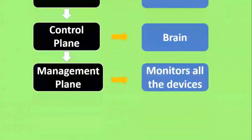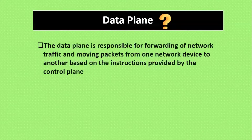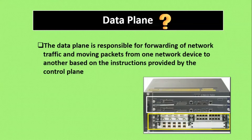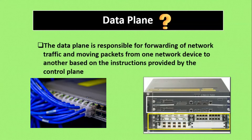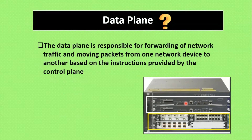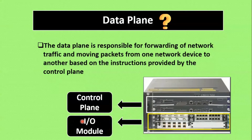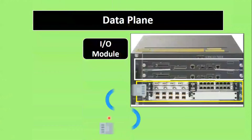Now we'll see the data plane in detail. In traditional networking, the data plane and control plane are integrated within the network devices such as routers and switches. The data plane is responsible for forwarding traffic or moving packets from one network to another based on the instructions provided by the control plane. In traditional devices, there are two models — the white model is the control plane, and the yellow model is the data plane, also called the I/O model.